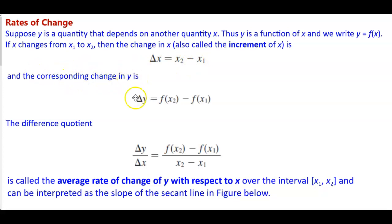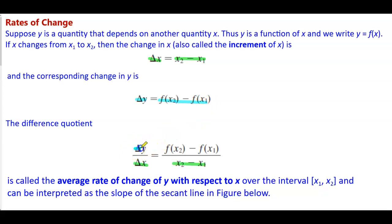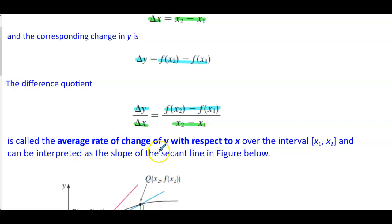And the corresponding change in y, delta y, or the change in y, is equal to f of x2 minus f of x1. This turns into the difference quotient: the change in y over the change in x, where the denominator is x2 minus x1 and the numerator is f of x2 minus f of x1. This is called the average rate of change of y with respect to x over the interval from x1 to x2.